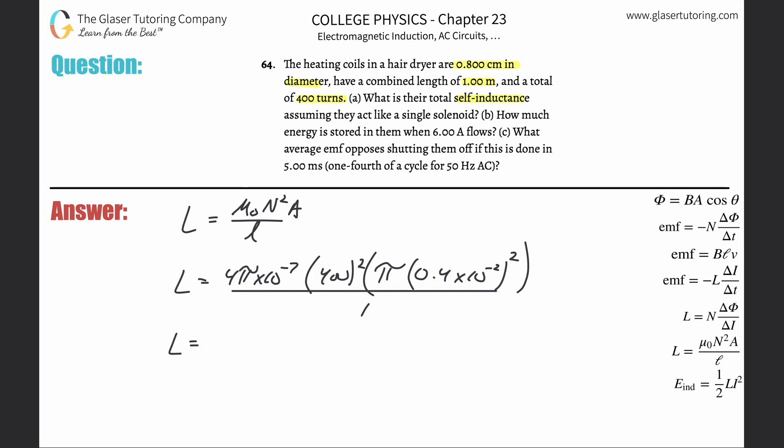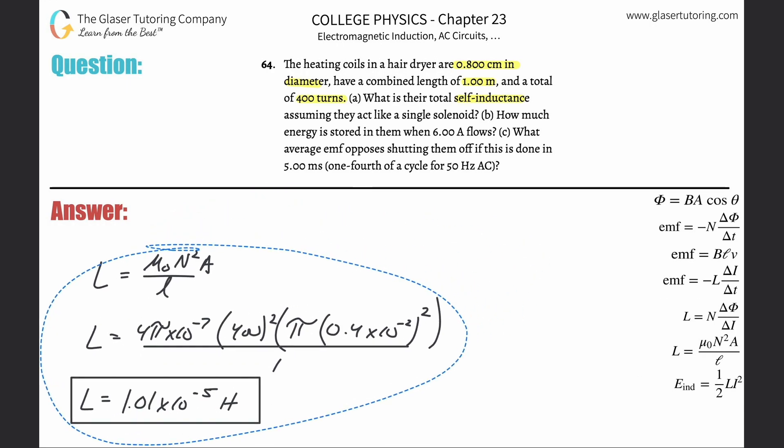And here we have a value of about 1.01 times 10 to the minus 5th. That's in henrys. Henry sounds like such a happy name—Henry!